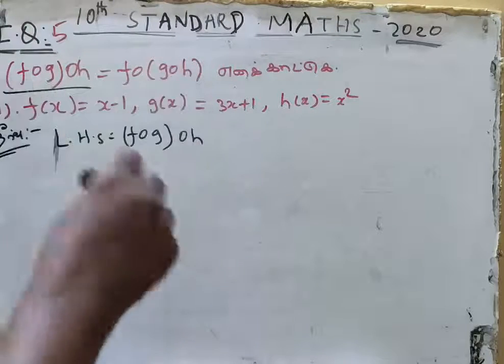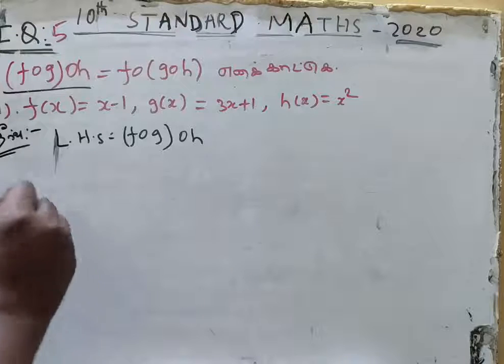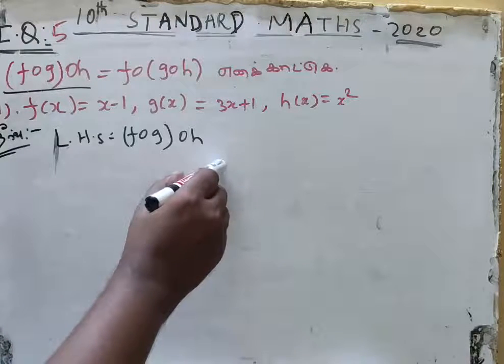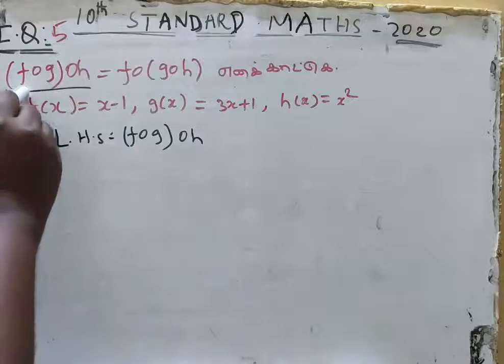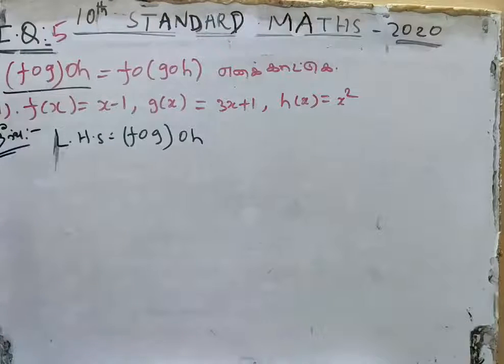The equation has an RHS and an LHS. First we will evaluate the LHS, which is f of g of h equal to 1.